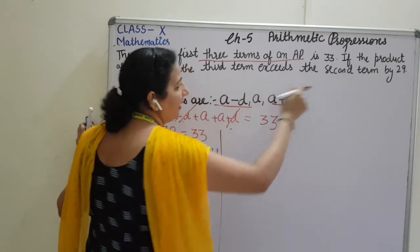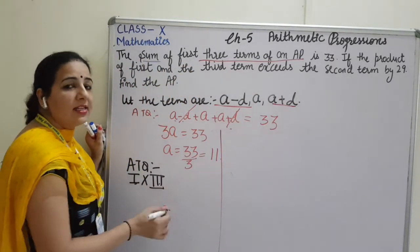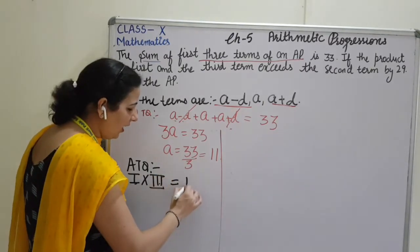Exceed the second term by 29. The product of first and third exceeds the second term. By how much? 29.